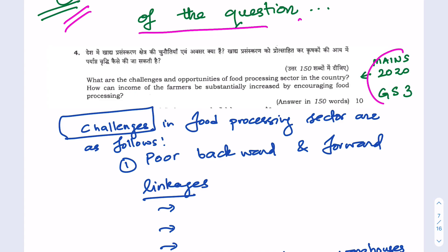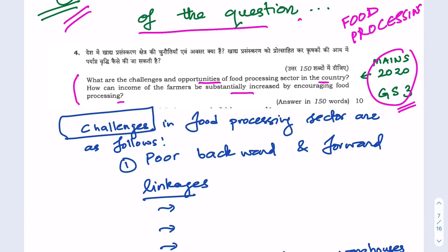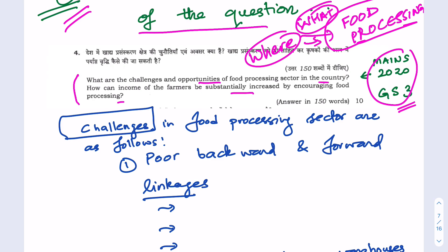Let us now look at this question. This was asked in Mains 2020 GS3: 'What are the challenges and opportunities of the food processing sector in the country? How can the income of farmers be substantially increased by increasing food processing?' You should know about food processing — the various food processing industries in India and where they are located.